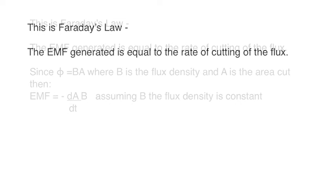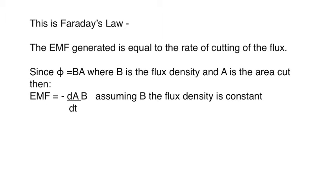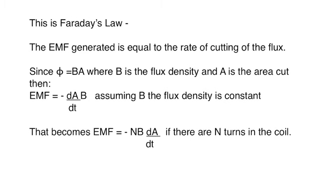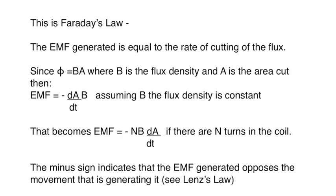Since the flux is equal to the flux density multiplied by the area, then the EMF is also equal to the rate of cutting of the area times the flux density. If we use a coil of n turns, then the EMF generated is n times larger. There's a minus sign in this expression, and that indicates that the EMF generated opposes the movement that is generating it. And this is the basis of Lenz's law, which we'll explain later.